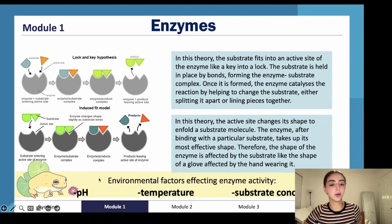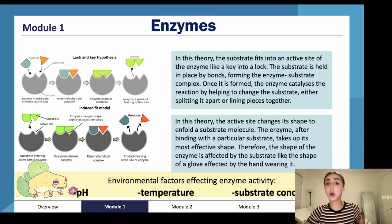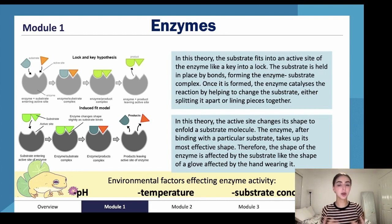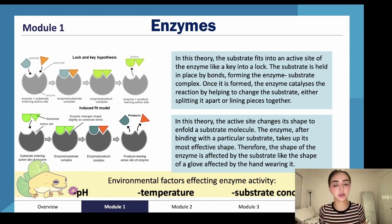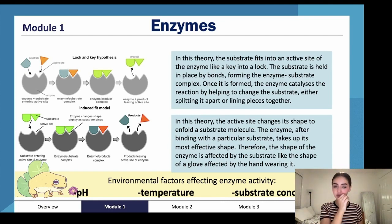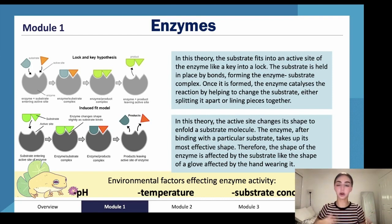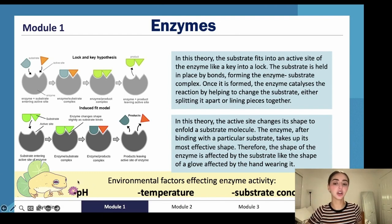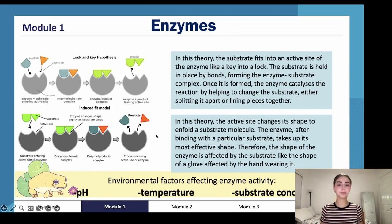There are environmental factors that affect enzyme activity. Enzymes, like all proteins, will denature — meaning they stop working — beyond certain conditions. Each enzyme can only function within a certain temperature range; exceeding either extreme causes denaturation. The same applies to pH levels and substrate concentration — enzymes can only operate within particular ranges of these factors.